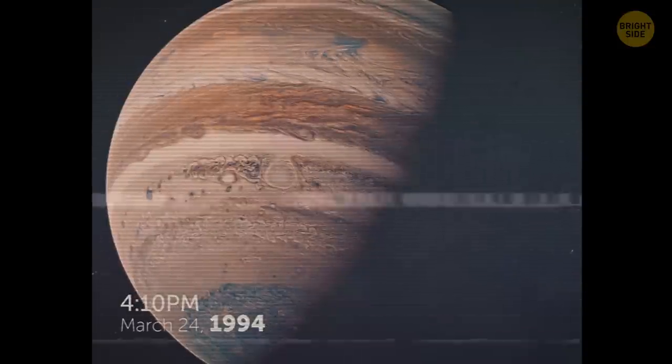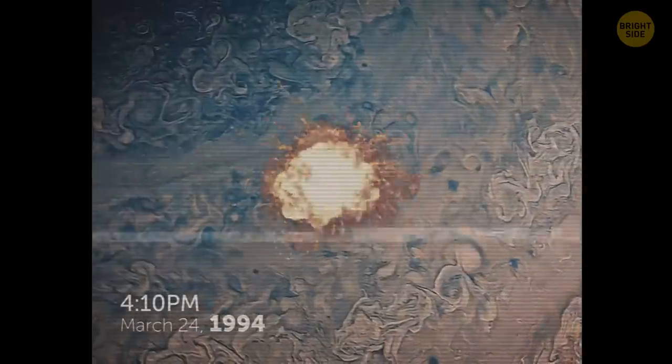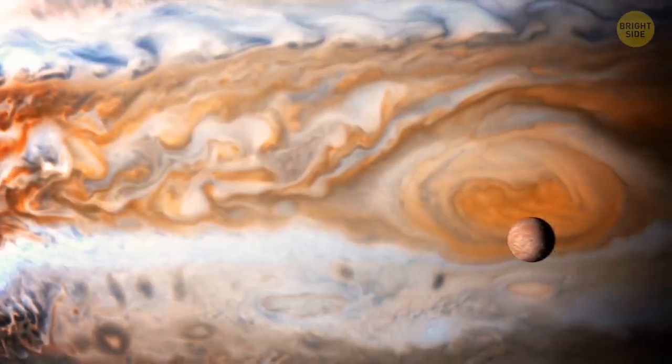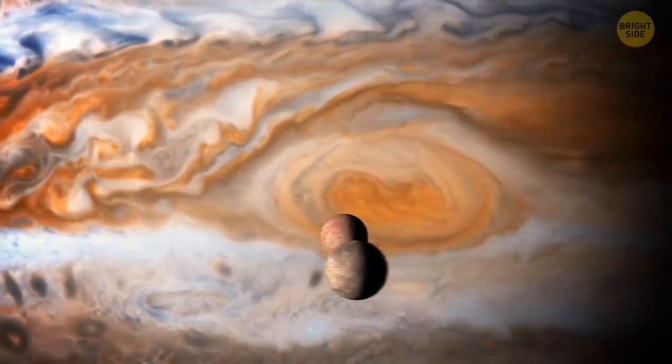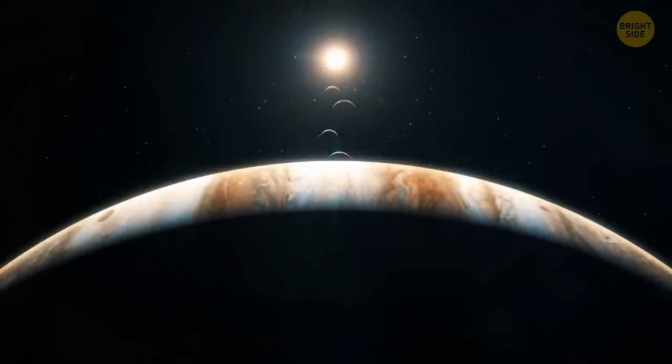In 1994, the Shoemaker-Levy 9 comet collided with Jupiter. Hubble captured the whole event in detail, like a resourceful journalist. The impact broke the comet into a lot of small pieces, which resulted in 21 other visible collisions. The largest impact created a fireball and a dark spot on Jupiter's surface. Hubble's observations not only sparked public interest in cosmic impacts, but also provided new insights into Jupiter's atmosphere.